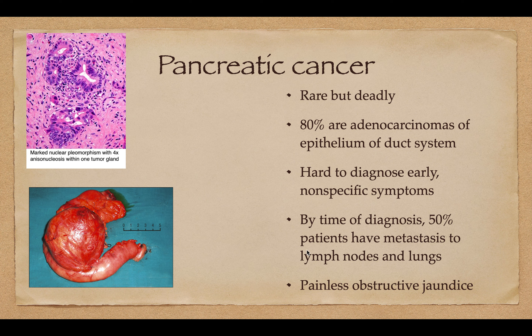It presents with painless obstructive jaundice, but by that time the pancreas is kind of shot. Here is the pleomorphism — all these cells are part of the tumor, and there's really no organization; it's just a bunch of cells.